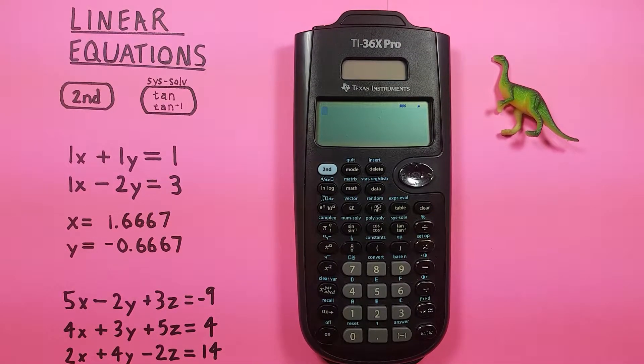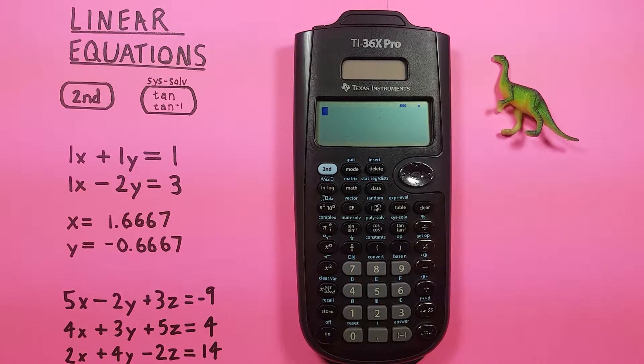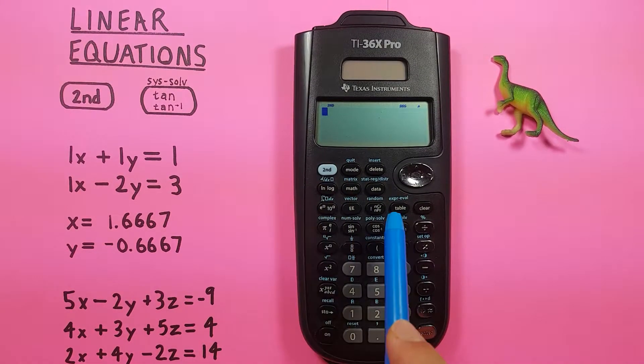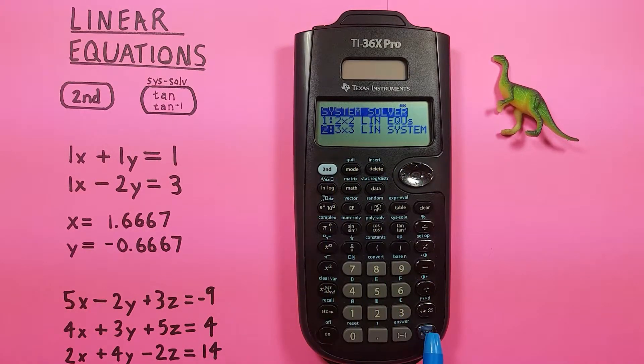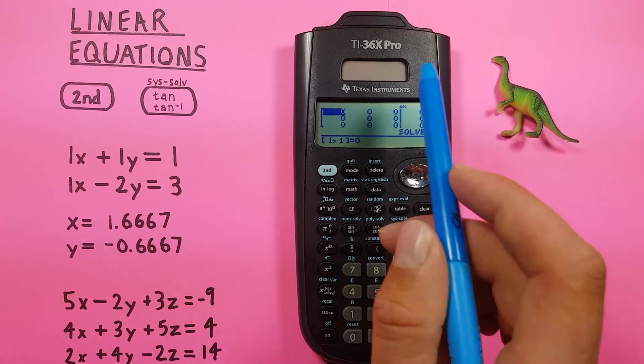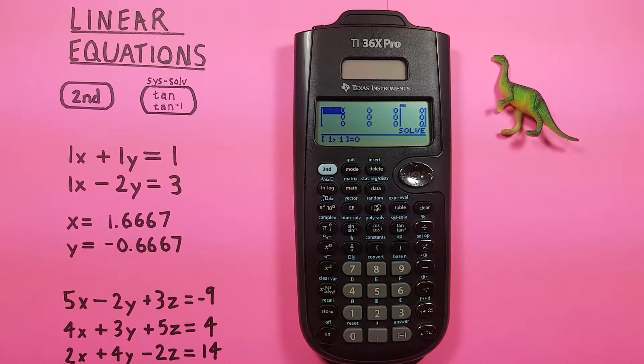All right, on to our three variable equations. So again, to get there, we press second function tan, back to this menu here, scroll down to number two, and press enter. Now we get this screen here, where we enter our variables in as a matrix.